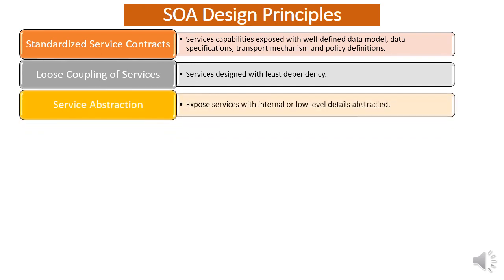The next design principle of service-oriented architecture is service abstraction. This design principle states that we should implement our services in such a way that we expose the contracts and capabilities through the contracts, but any internal technicalities or technical details underneath our services are not exposed to the outer world — they are completely abstracted. This ensures that any internal changes do not affect end users, since the service contract does not expose the technical details.